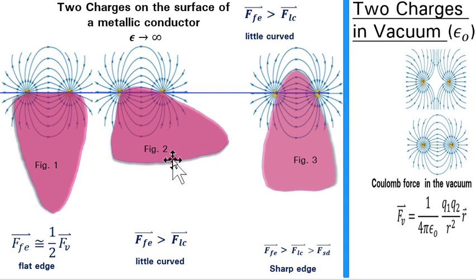In conclusion, as the surface gets more curved, the electric field lines get shielded more and more, which means that the force between the two charges at sharp edges is less than at flat edges.